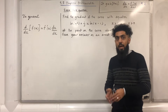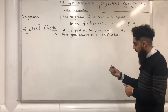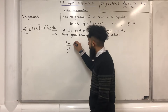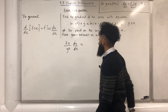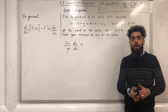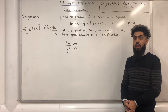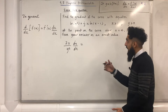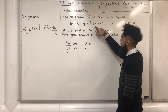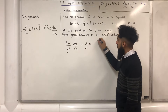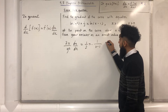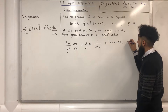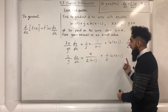Differentiating ln y squared with respect to x: I get 2y over y squared, then stick in dy over dx. On the right-hand side, I have a product of two functions — one half x multiplied by ln(x minus 1) — so I use the product rule. That gives one half x multiplied by the derivative of ln(x minus 1), which is 1 over (x minus 1), plus ln(x minus 1) multiplied by the derivative of one half x, which is one half. After simplifying, I get the resulting equation.